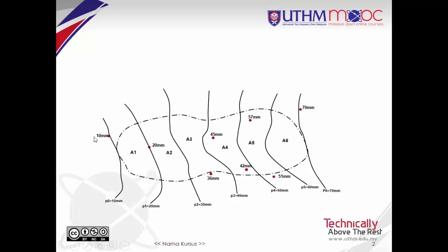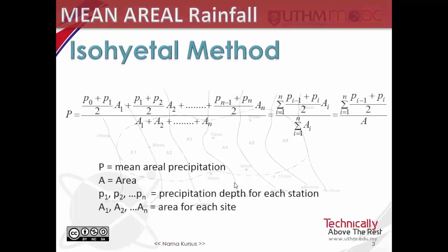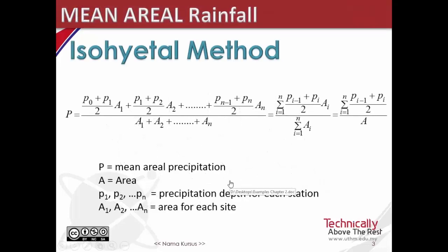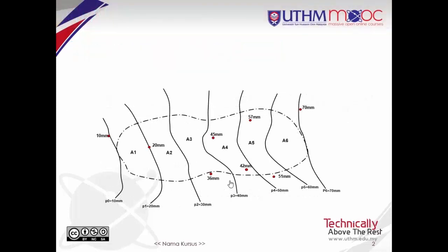An interpolation between gauges is performed and rainfall amounts at selected increments are plotted — they are increasing. Identical depths from each interpolation are then connected to form isohyets, or lines of equal rain depth. The aerial average is the weighted average of depth between these isohyets, that is the mean value between two consecutive lines.